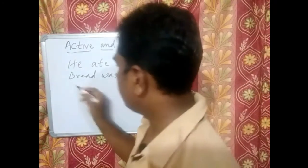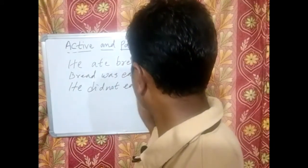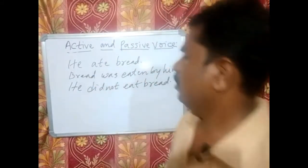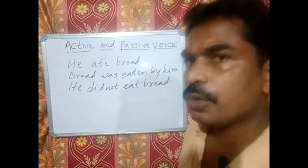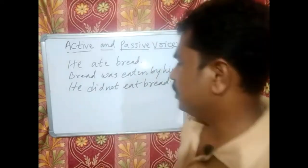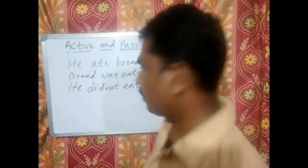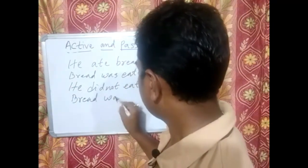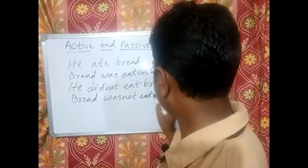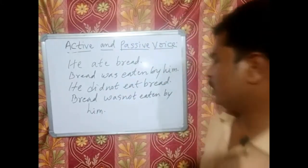Now let me write a negative sentence: 'He did not eat bread.' In the present form we discussed 'do' and 'does'; here we have 'did.' We will not repeat 'did' — we replace it by using be-words. So the passive form is: Bread was not eaten by him. You can change it like that.